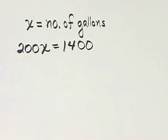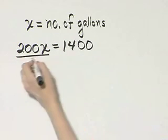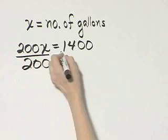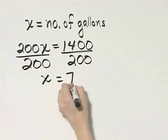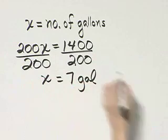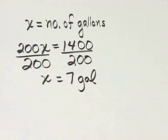To solve this, divide both sides by 200, and we get X equals 7. That means we need 7 gallons of sealer.